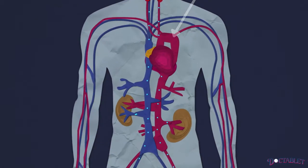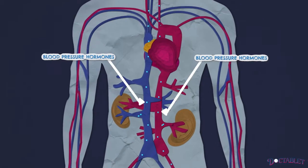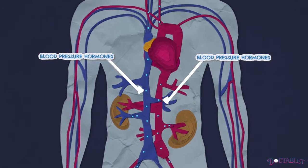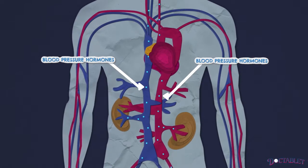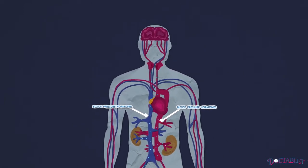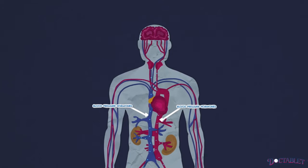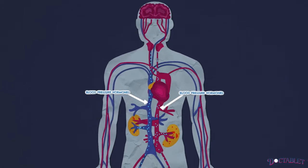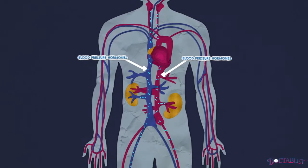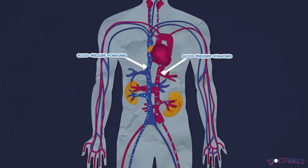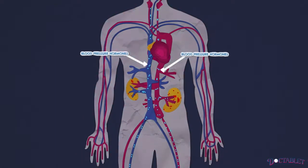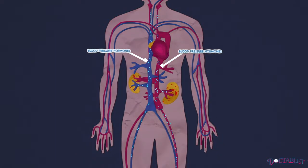Specific hormones are responsible for helping regulate the amount of salt and water we retain inside our bodies. A variety of inherited conditions can cause the overproduction of these substances, and this leads to abnormal blood pressure elevation.